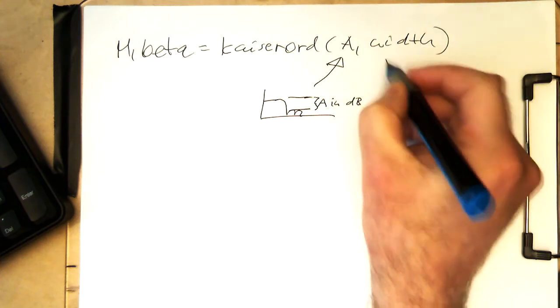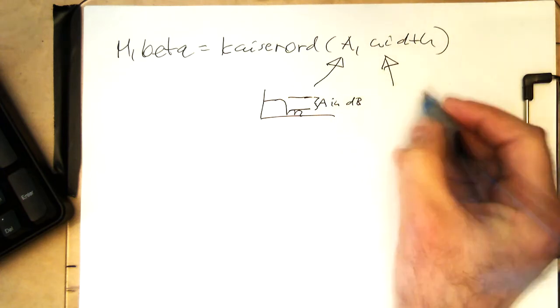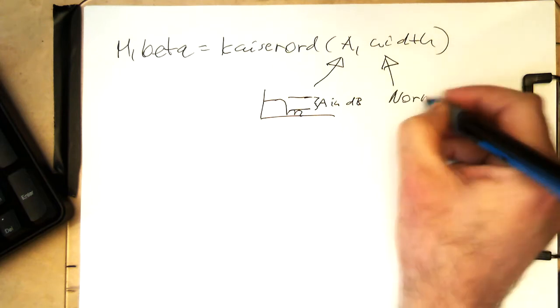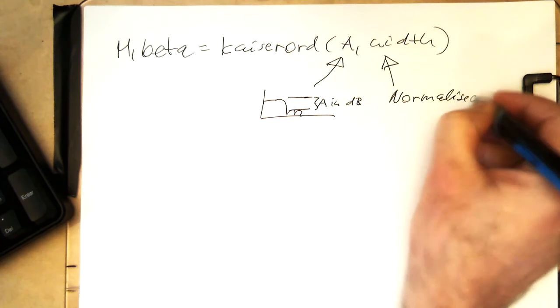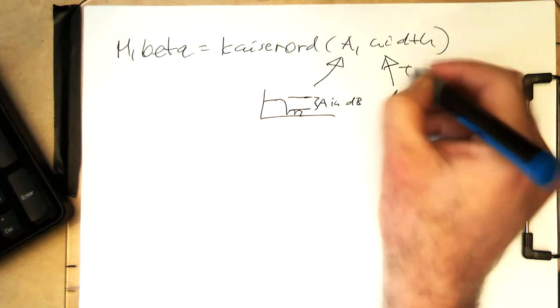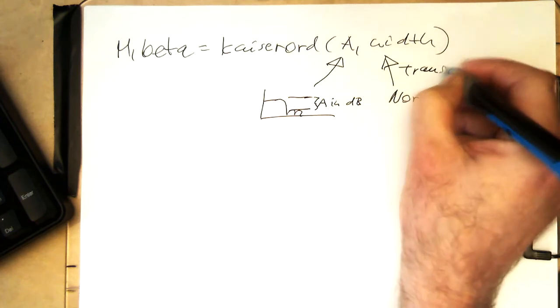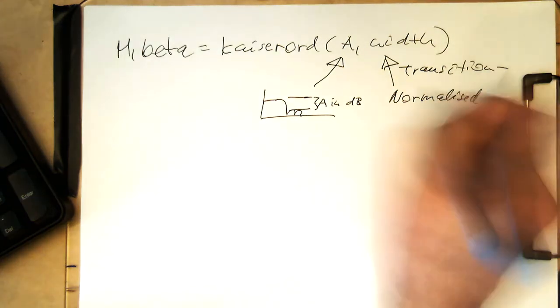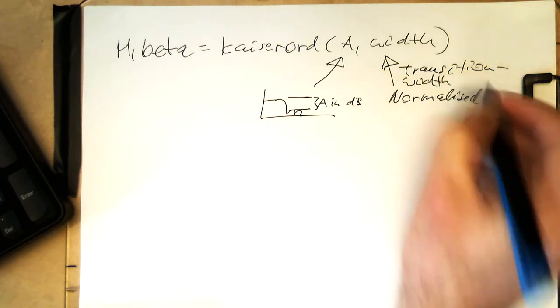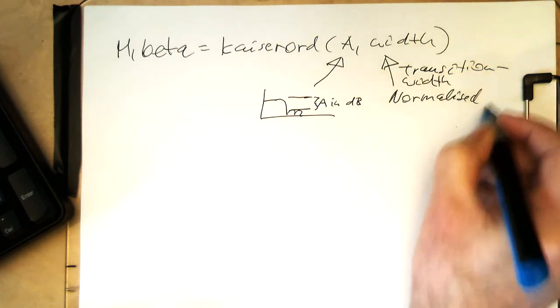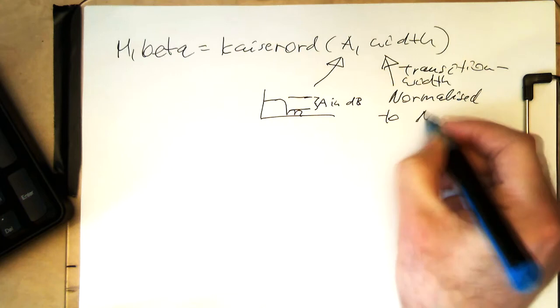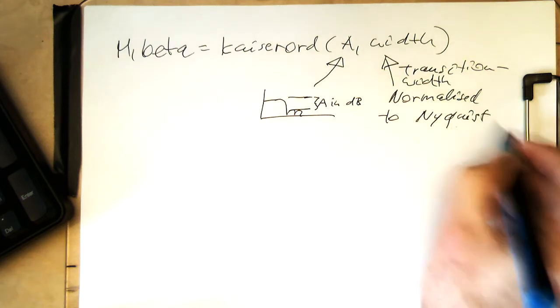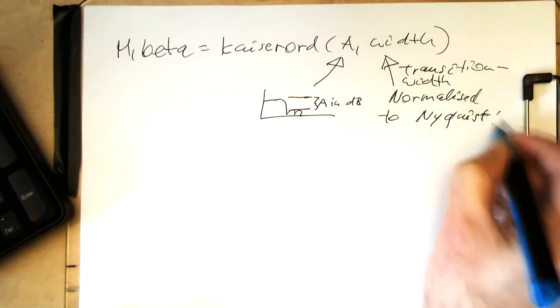And the width, this is the width normalized. So transition width.